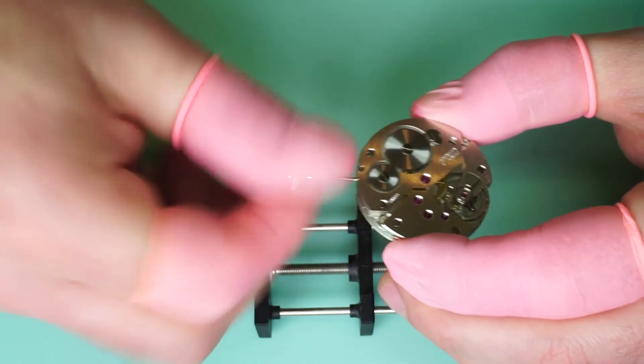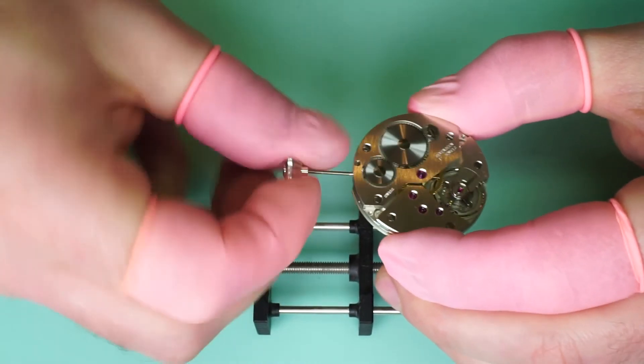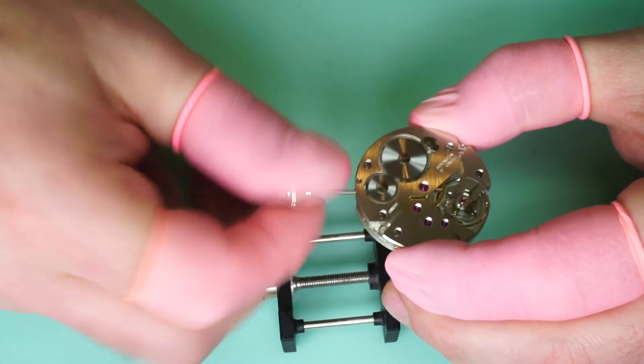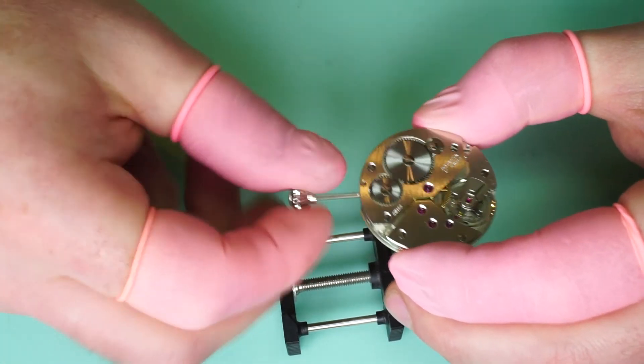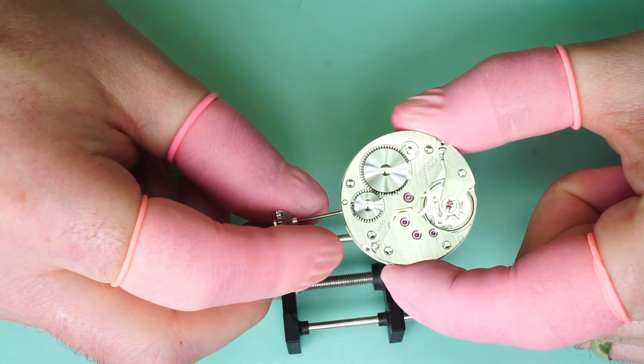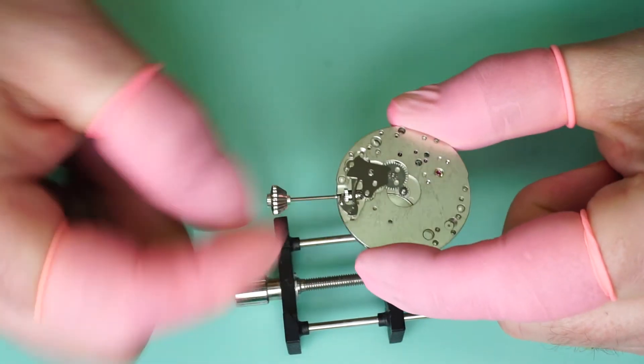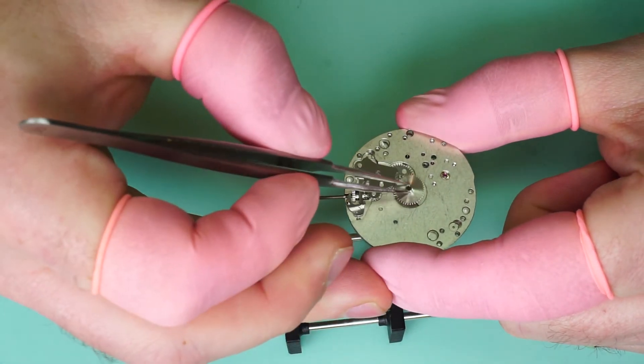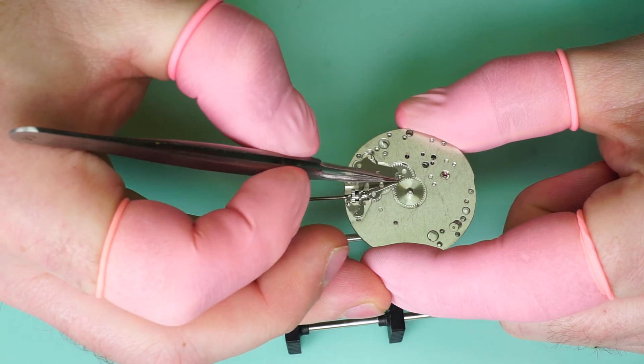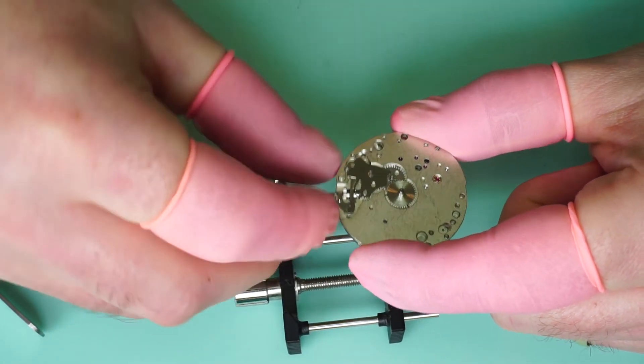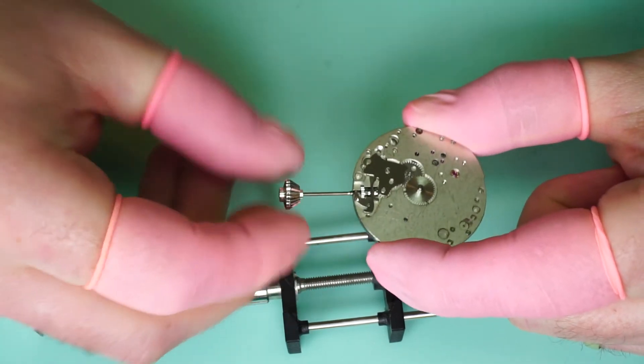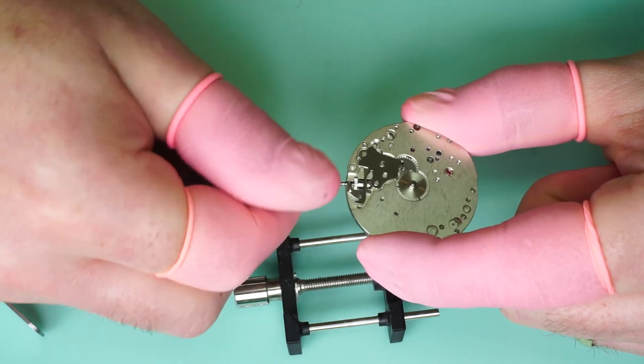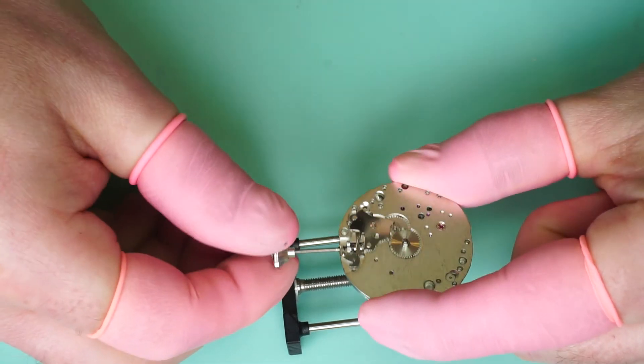So we can wind the movement up fully, which is in preparation for the next video we're going to be looking at the timing and how to adjust the timing. So the movement is now fully wound. We can check on this side that everything is working. We fit the hour wheel and we can see that that's all working as well.